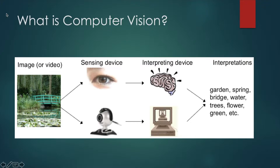There are differentiations done between human perception and computer perception. For human perception, we have an image or a video which the human eye sees. After seeing or sensing this image, neurons in our brain get activated and send sensory information, perceiving that the image consists of some kind of object — whether it contains a garden, spring, bridge, water, trees, pond, fish, etc.